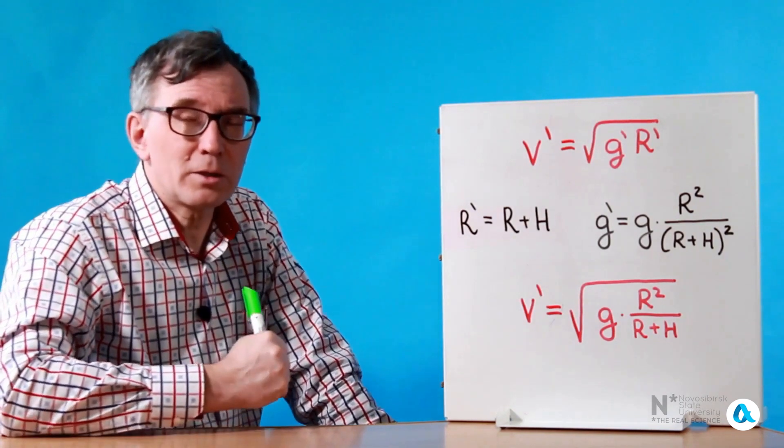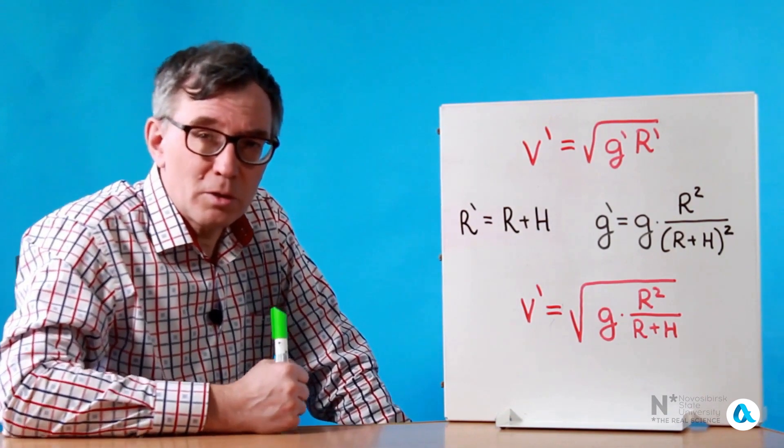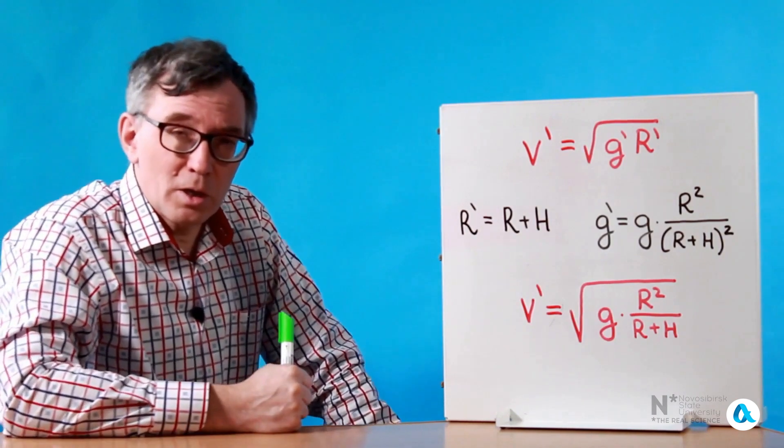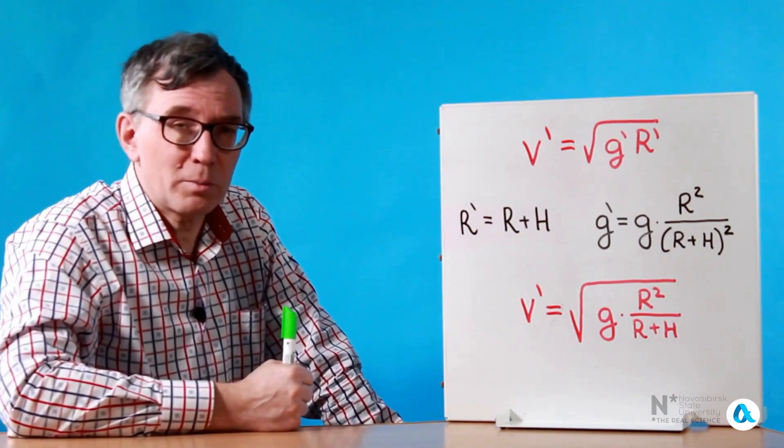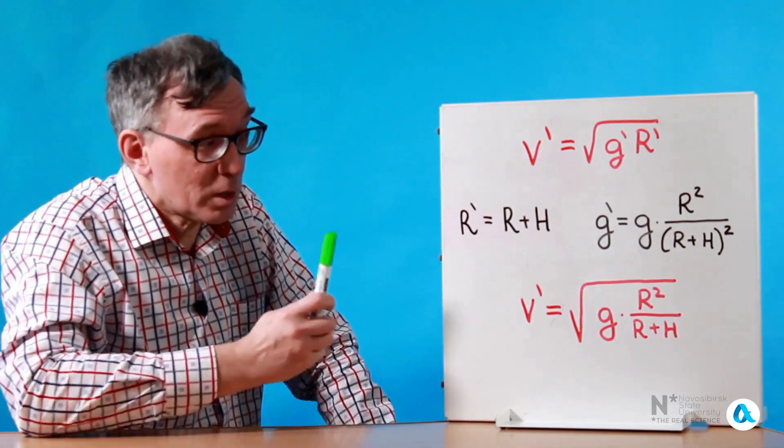The rocket must exit the Earth's atmosphere, meaning it needs to rise to an altitude of several hundred kilometers above the surface of the Earth. This means that the orbital speed of the rocket will differ from the first cosmic speed. Now we will see how exactly it depends on the flight altitude.